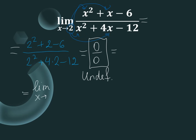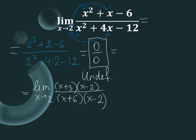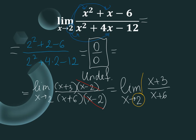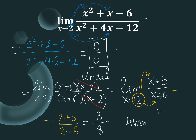We write limit x approaches 2. The numerator factors as x plus 3 times x minus 2, and similarly for the denominator. We cancel out x minus 2, leaving limit x approaches 2 of x plus 3 over x plus 6. Substituting x equals 2 gives 2 plus 3 over 2 plus 6, which is 5 over 8. That is the answer for example 4.